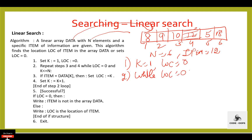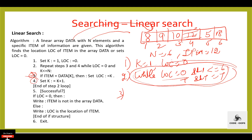While loc equals 0 and k is less than or equal to n (n equals 6), the condition is true. So we execute steps 3 and 4. Step 3: if item (item is 12) equals data[k], and k is 1 so data[k] is 8 — 12 equals 8 — the condition is false. Then execute step 4: k equals k plus 1, so k becomes 2.